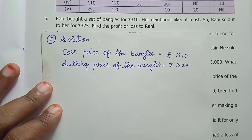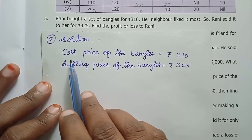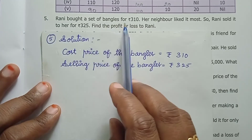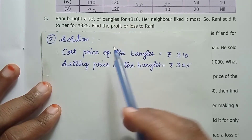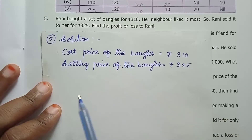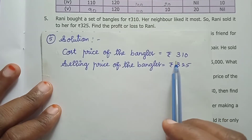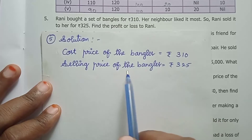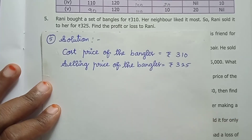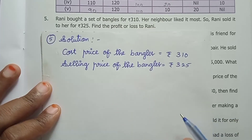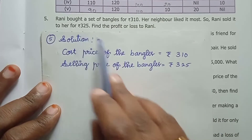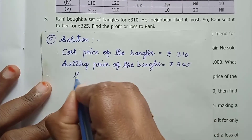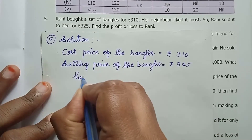Given values: Cost price of the bangles — cost price means how much she bought it for — is Rs. 310. Selling price of the bangles — selling price means how much she sold it for — is Rs. 325.